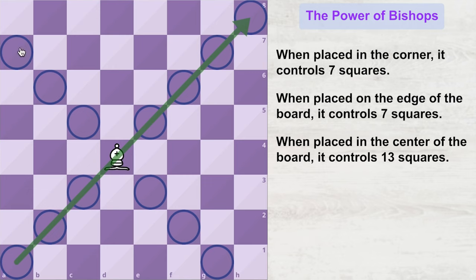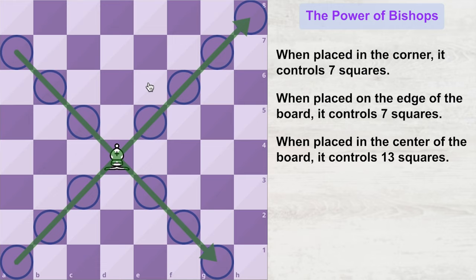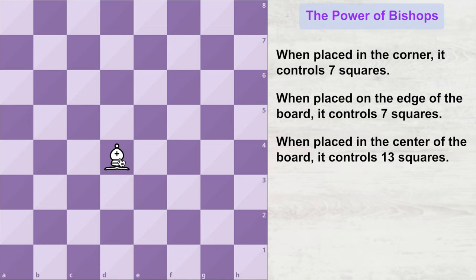So what does this mean? This means that when a bishop is placed in the center of the board, it can control more squares than if it is placed on the side or on the corner of the board. So if you want to leverage the power of a bishop in a chess game, you should place it somewhere near the center of the board where it can control more squares.